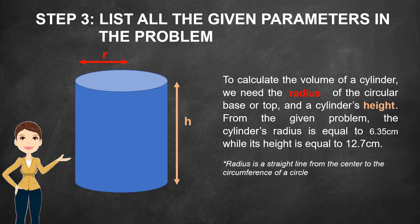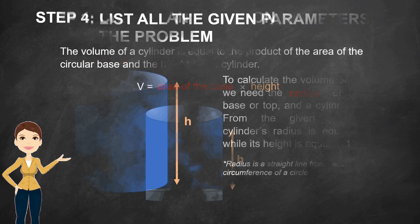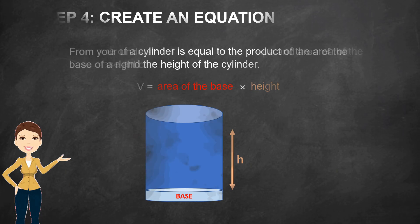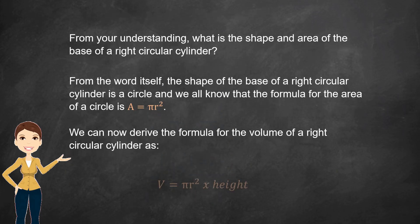Note that the radius is a straight line from the center to the circumference of a circle. Step 4: Create an equation. The volume of a cylinder is equal to the product of the area of the circular base and the height of the cylinder — Volume equals area of the base times height. The shape of the base of a right circular cylinder is a circle, and the formula for the area of a circle is A equals pi r squared. We can now derive the formula for the volume of a right circular cylinder as V equals pi r squared times height.